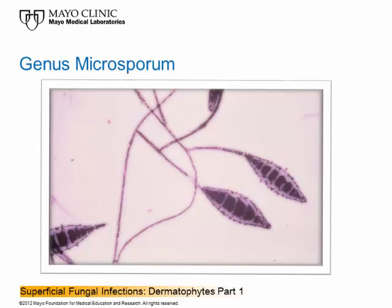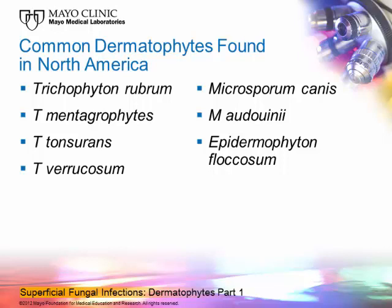The most common dermatophytes seen in North America, roughly in order of predominance, are: Trichophyton rubrum, Trichophyton mentagrophytes, Trichophyton tonsurans, Trichophyton verrucosum (which infects cattle), Microsporum canis (which infects cats and dogs and can infect humans), Microsporum audouinii, and Epidermophyton floccosum.